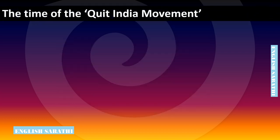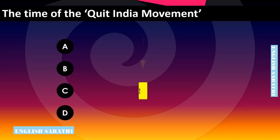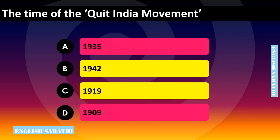The time of the Quit India Movement dash. Options are: option A - 1935, option B - 1942, option C - 1919, option D - 1909. The correct option is option B - 1942. 1942 is the time of the Quit India Movement.